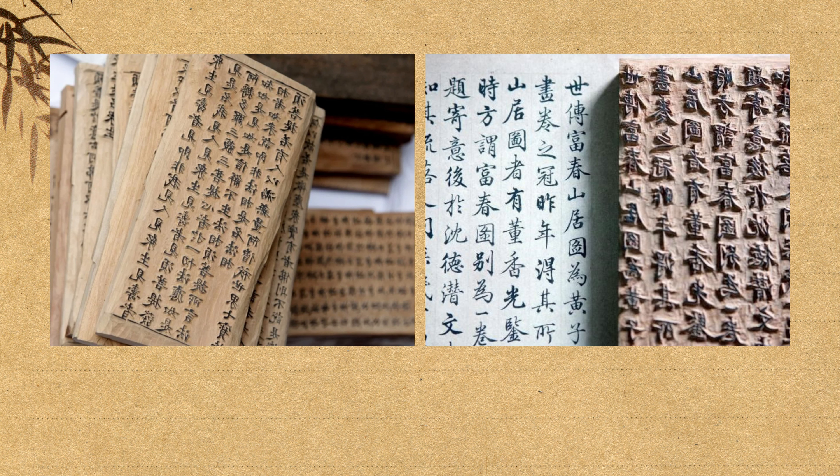This process involved carving images or characters onto a wooden block. The block was then inked and pressed onto paper or fabric, transferring the design. This technique was primarily used for printing texts related to Buddhism, as well as intricate designs on textiles.